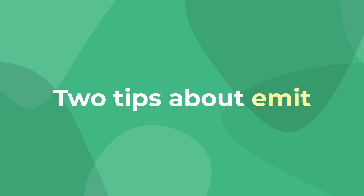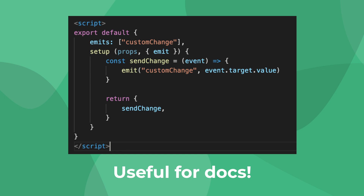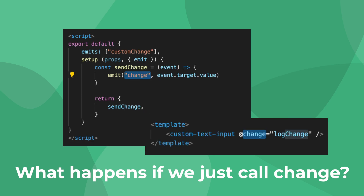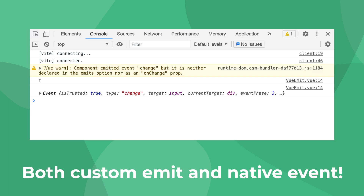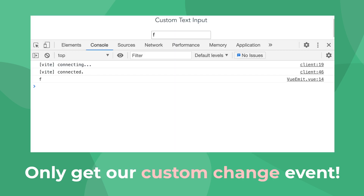In Vue 3, we can actually define custom events for a component using the emits option in our export default. This is important for keeping good documentation and knowing exactly what each component does. Also, defining events in emits allows component events to take priority over native events. Right now our event is called custom change, but if we change it to change and look at what happens, we'll see that multiple things are getting logged. However, if we go in and define an event called change, we can override the default action and only capture our custom event.